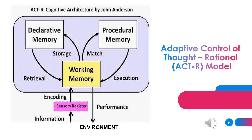Adaptive Control of Thought, Rational — the ACT-R model. A metaphor worth understanding: the physical architecture yields a neurological architecture, which yields a cognitive architecture, and that's what the model is about. A theory of cognitive architecture.